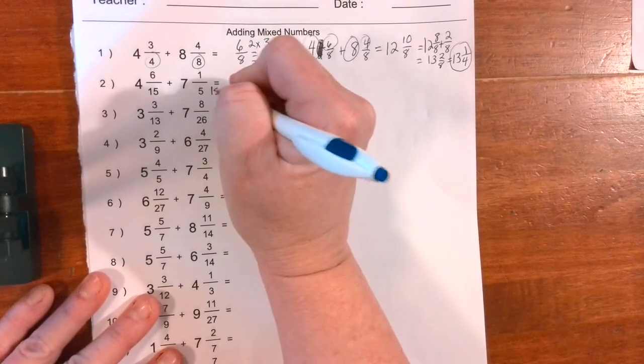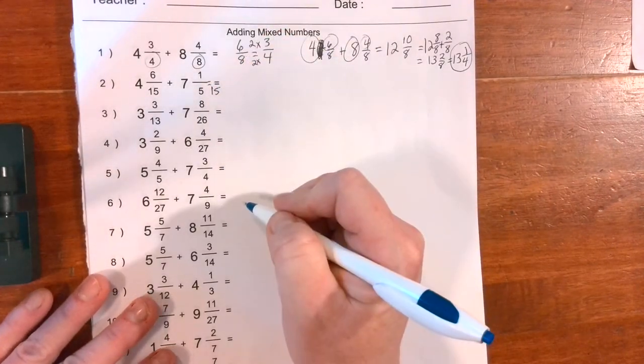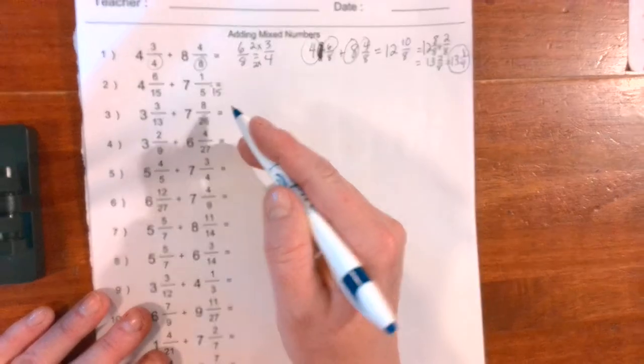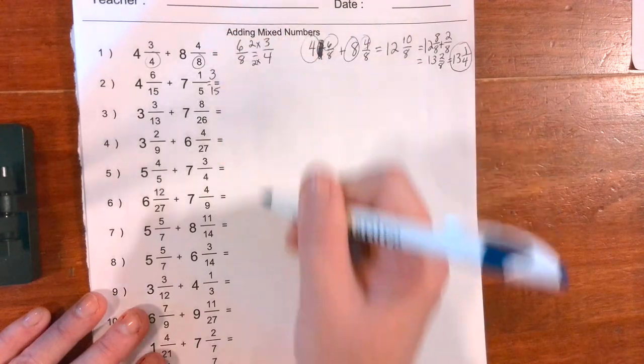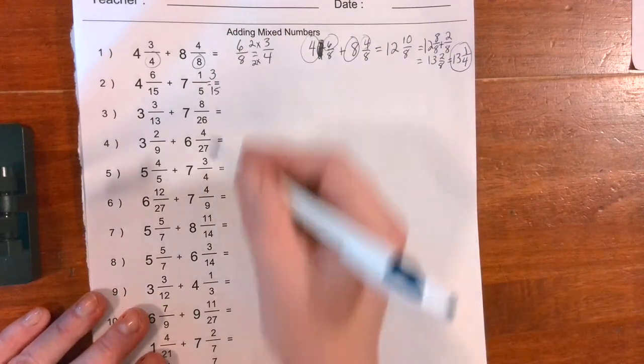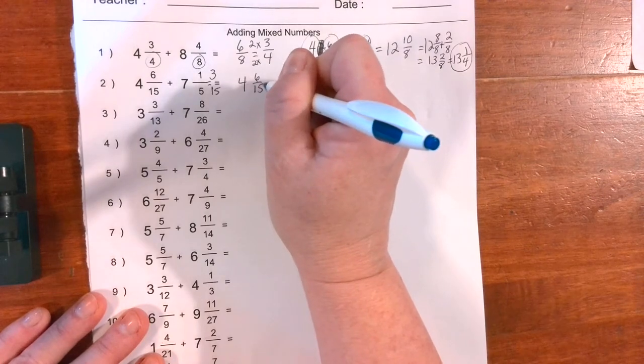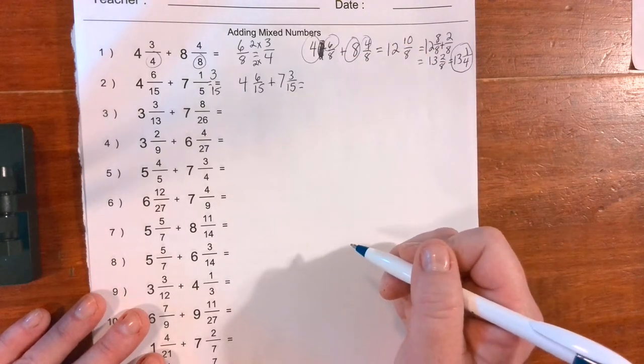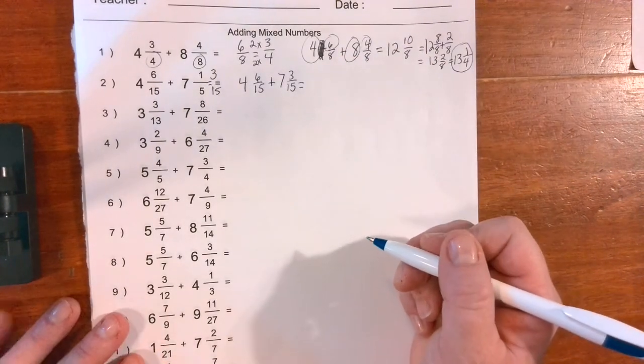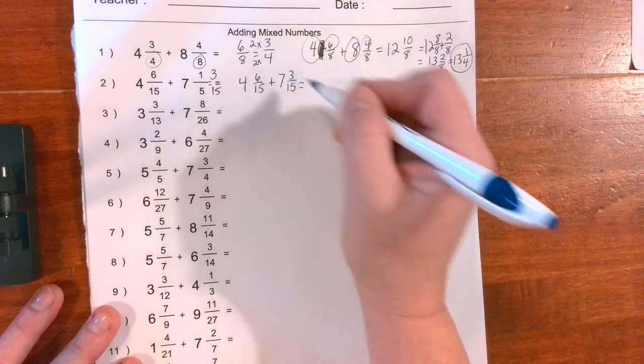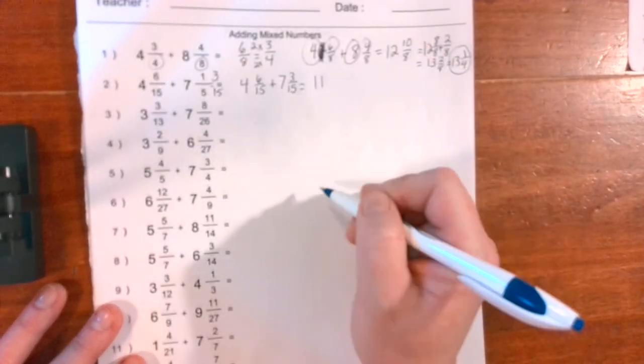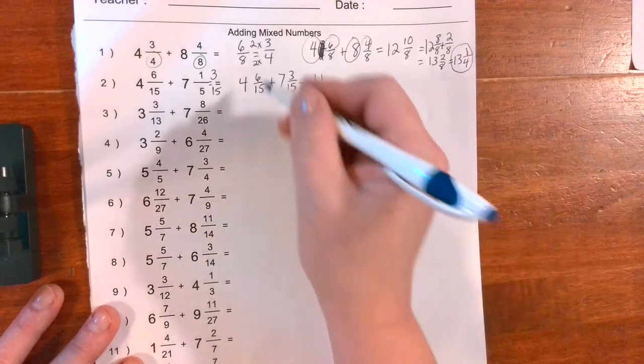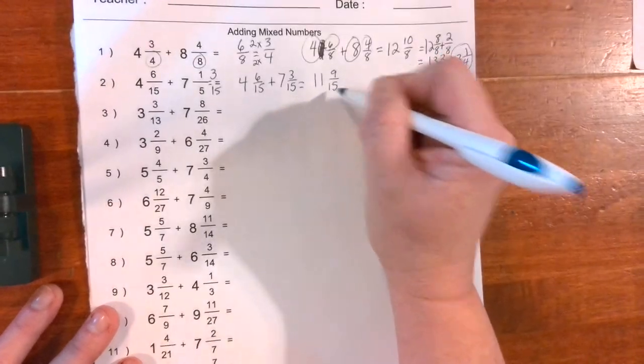I'm going to go ahead and just make my equivalent fraction right here. Five times what is fifteen? Three. If I do it to the bottom, I got to do it to the top. One times three is three. So my new problem is going to be 4 and 6/15 plus 7 and 3/15. Okay, think in your head. What's our first step? Yep, we're going to add our whole numbers. Seven plus four is eleven. What's our next step? Think in your head. Six plus three is 9/15. Am I done?